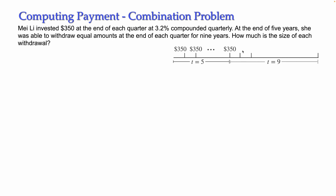We need to compute the withdrawal amount every quarter. To know this withdrawal at the end of each period, we need to know the amount at the beginning. So for solving this problem, I'm going to use the first annuity to compute its future value. For this first annuity, the payment is $350.